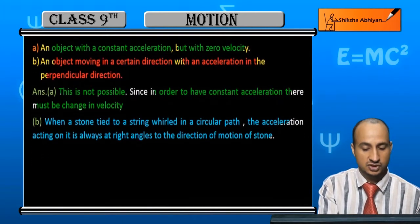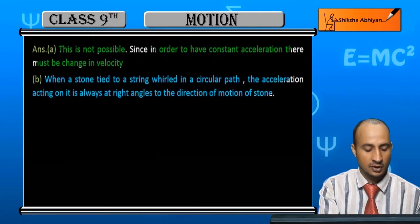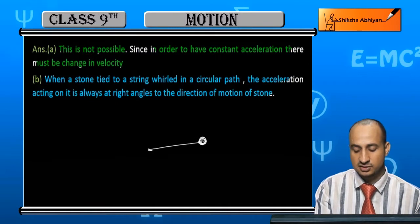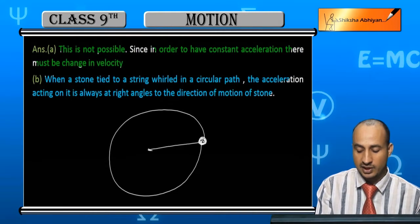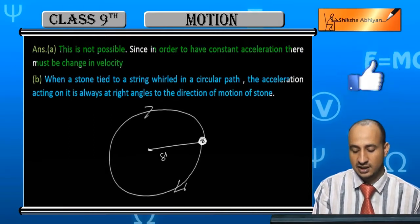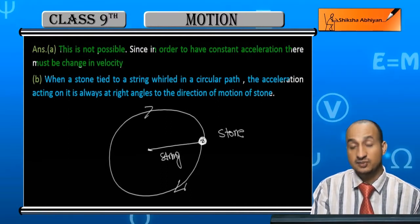So when you have this situation, this is stone which you will revolve in a circular path. You revolve it in circular path like this. This is your string and this is your stone.